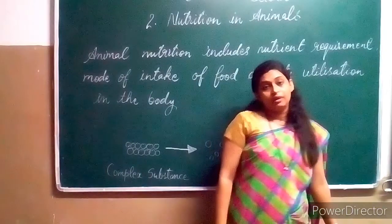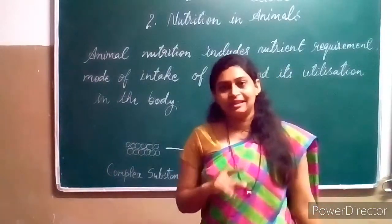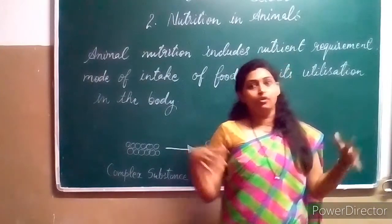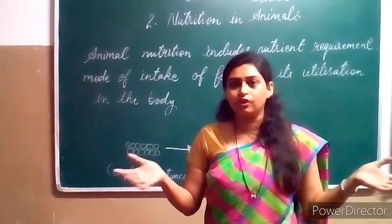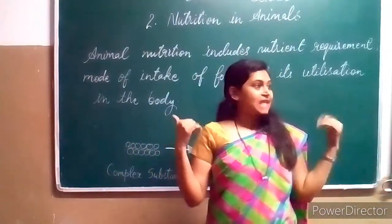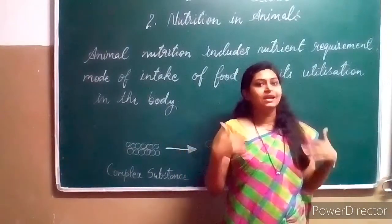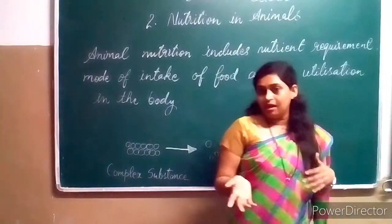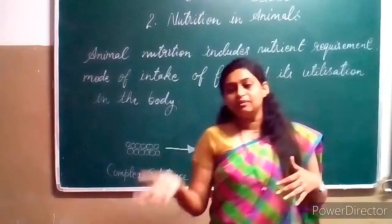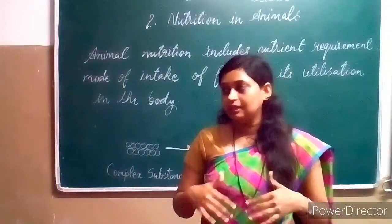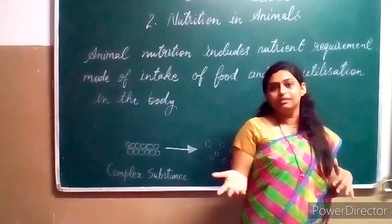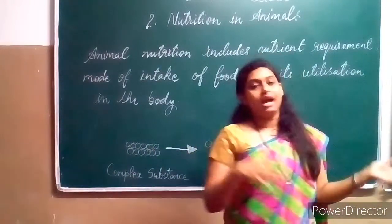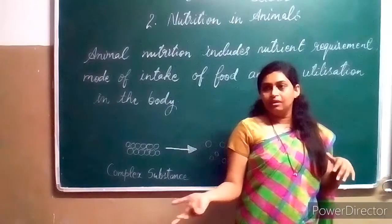We have learnt in the last lesson about nutrition in plants. Plants prepare their own food by the process of photosynthesis. But animals depend on plants — they eat plants directly or indirectly. They eat other animals for their food. Some animals eat both plants and animals.